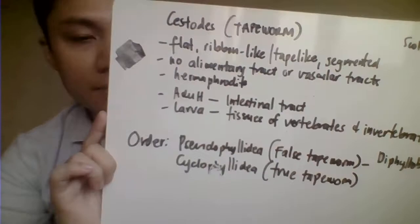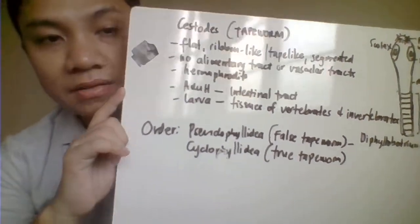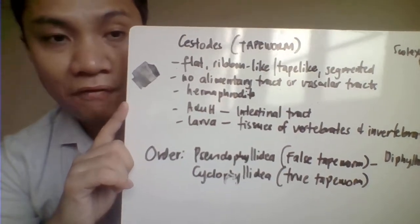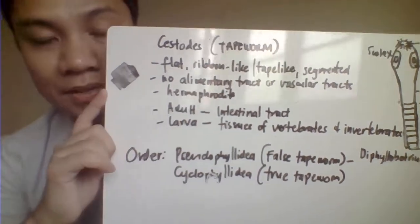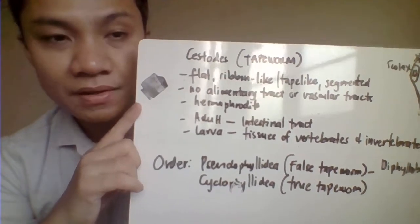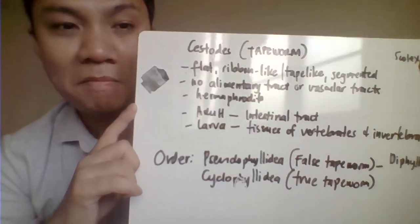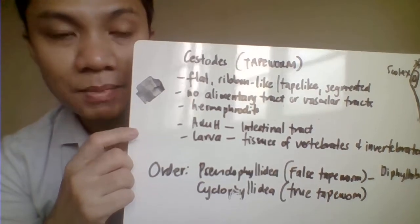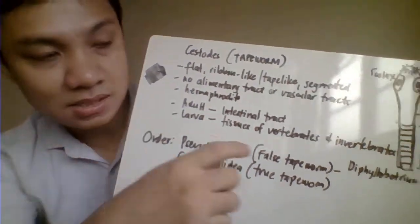Today we're going to discuss the last topic in parasitology: the phylum Platyhelminthes, class Cestoda. The other name for Cestoda is tapeworm. This belongs to Platyhelminthes, so we expect the adult to be flat. They're called tapeworms because of their length — very long, like a tape measure. They differ from trematodes because the body is divided into several segments.